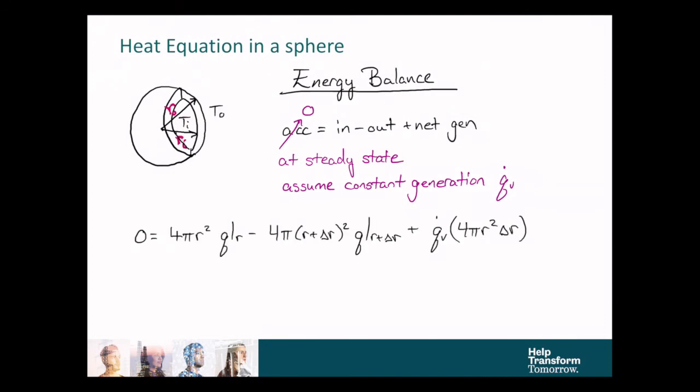So writing out this expression, we have that the heat transfer area at a radius position r is 4 pi r squared. So we multiply that area by the heat flux of that position. And now if we go an incremental distance further out in the spherical shell, we're at position r plus delta r, and the surface area there is 4 pi quantity r plus delta r squared. And we multiply that by the flux at the position r plus delta r. And finally we get to the generation term, which we multiply by the volume of the differential shell.